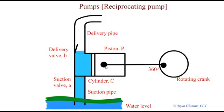This high pressure causes the delivery valve B to open and finally the fluid is discharged at high velocity through the delivery pipe.